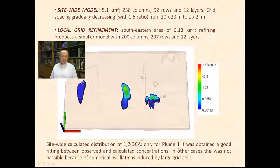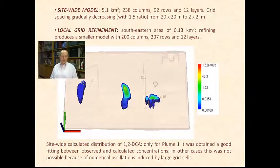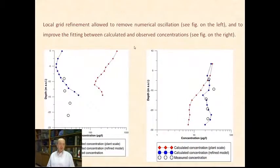Only for plume number one, it was obtained a good fitting between observed and calculated concentration. In other cases, this was not possible because numerical oscillation was induced by large grid cells. So you need also, in terms of model, a very strong modeling. The local grid refinement allowed to remove the numerical oscillation and to improve the fitting between calculated and observed concentrations. So if you pass from a site scale model to a very detailed and local model, we can have positive results in terms of calibration.